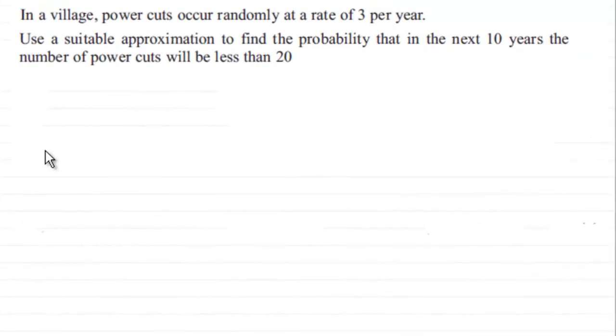Hi, in this example we're given that in a village power cuts occur randomly at a rate of 3 per year. Use a suitable approximation to find the probability that in the next 10 years the number of power cuts will be less than 20.